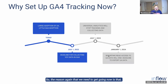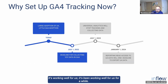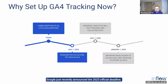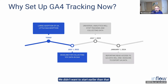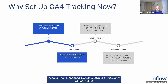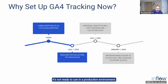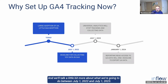The reason we need to get going now is that the deadline for collecting year-over-year data in GA4 is July 1st, 2022. Google recently announced the 2023 official deadline, which made this 2022 unofficial deadline essentially happen. We've been working for the last several weeks to get a process in place. We didn't want to start earlier because GA4 is still half-baked and not ready for a production environment. We'll talk about what we're going to do between July 1st, 2022 and July 1st, 2023.